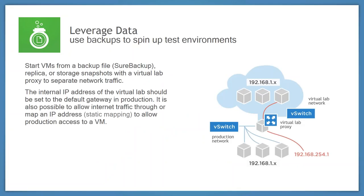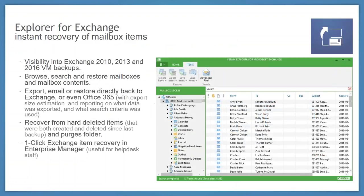The virtual lab uses virtual switches acting as proxies between two networks — the virtual lab network and your production network. Machines boot up with the same IP address they had in production, without IP conflicts because the networks are segmented through the virtual lab proxy. It can also do masquerade IP, where you set an IP address when setting up the virtual lab to access the virtual machine inside the virtual lab network. Users who test applications can access the machine and do their own testing while it's spun up.